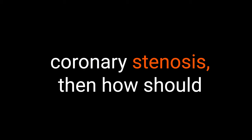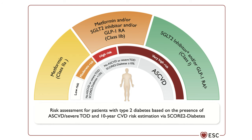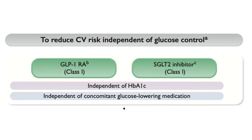If we are not going to screen asymptomatic patients for coronary stenosis, how should we manage their potentially hidden coronary disease? The management of asymptomatic patients should be the same as mentioned in the previous episode: controlling blood pressure, LDL, hemoglobin A1c, physical exercise, body weight, diet, etc. And of course, it's important for high-risk individuals to be on an SGLT2 inhibitor or a GLP-1 receptor agonist.